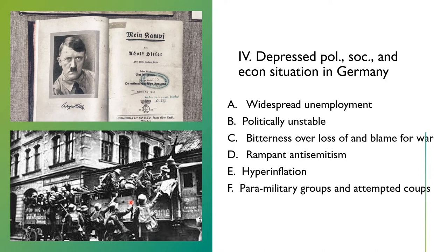Men gathered to take part in what was called the Beer Hall Putsch in Munich, led by Adolf Hitler. Hitler was arrested for his part in that attempted coup, which was a failure. As a result, Hitler was imprisoned for five years, and while he was in prison he wrote his book called Mein Kampf, or My Struggle.